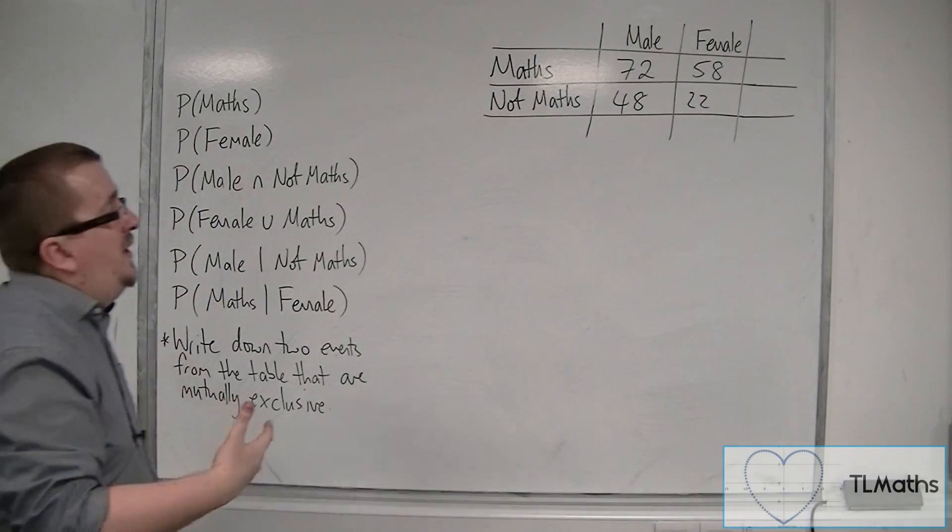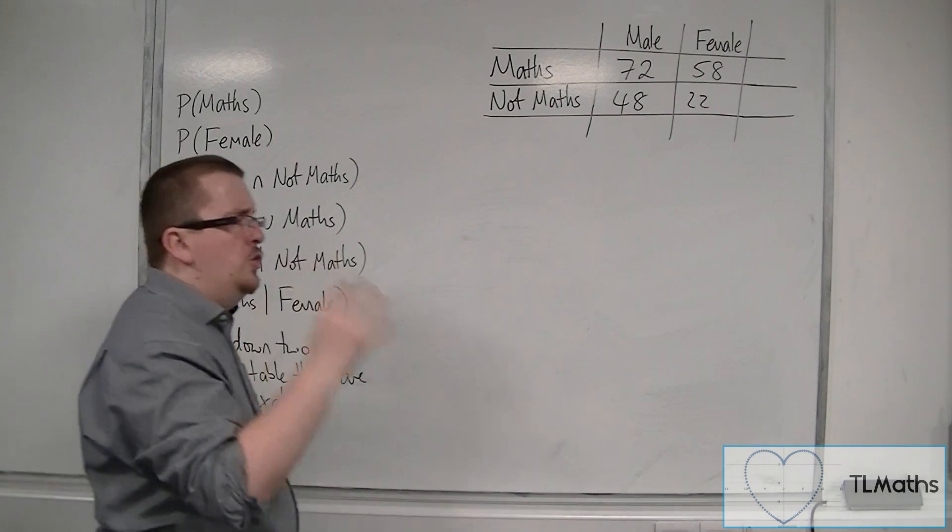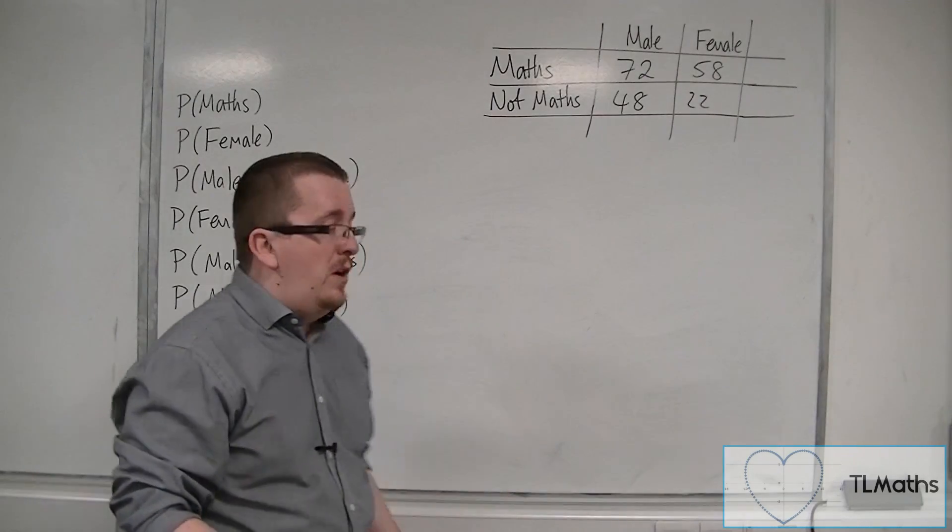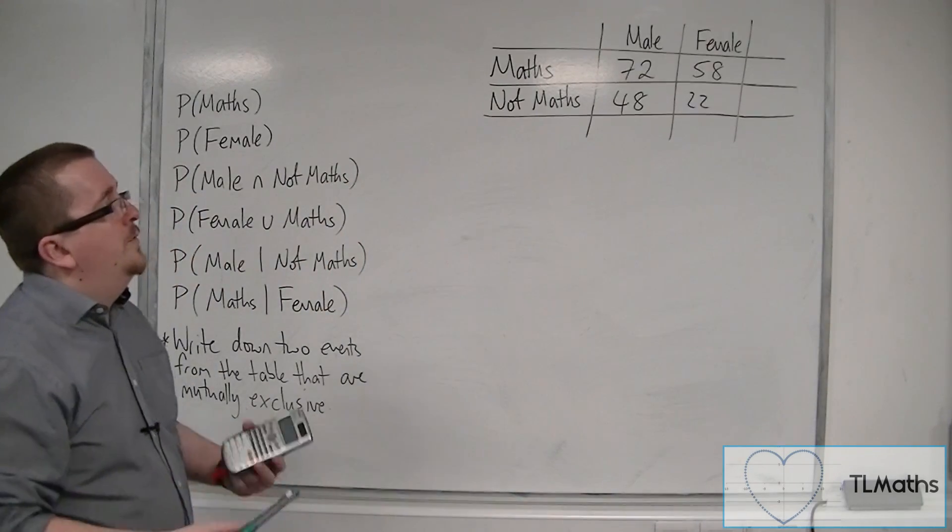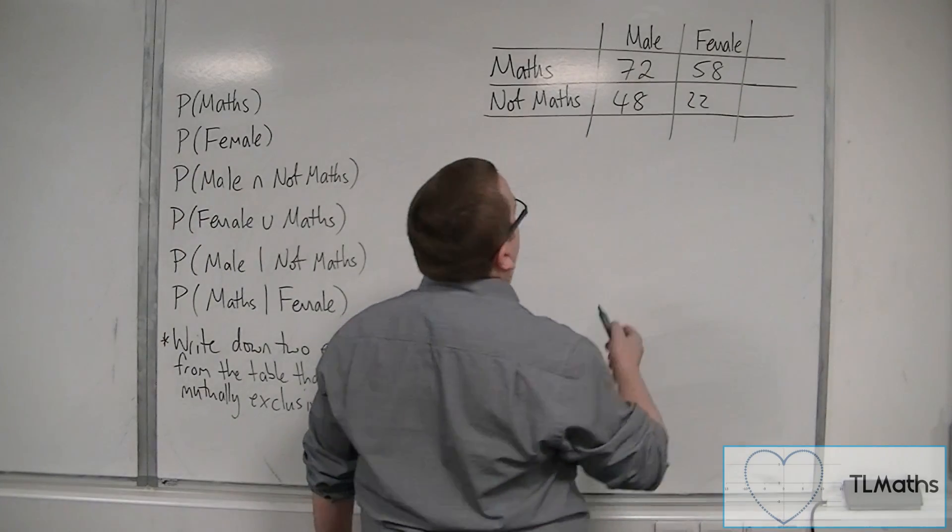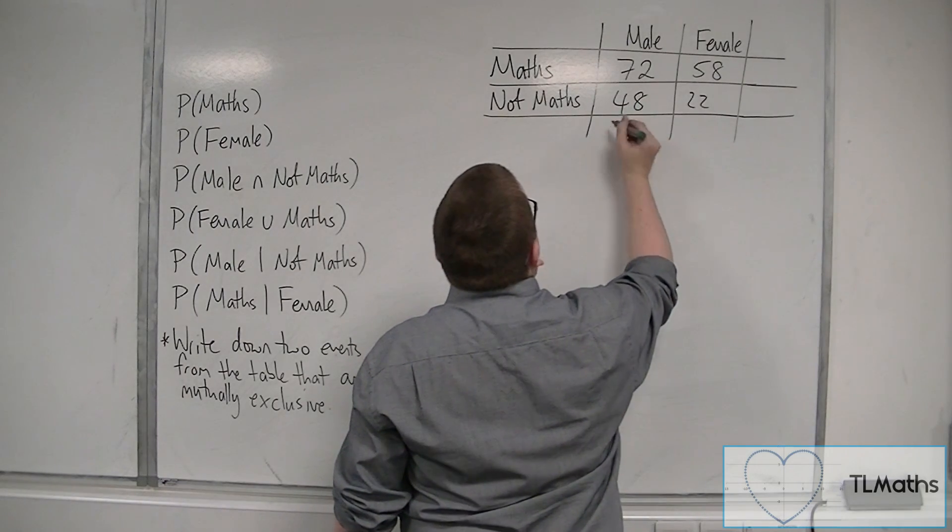And the first thing to do with a two-way table like this is to make sure that you have added up the totals. The totals may well be there if the question is in the exam, but if not then they need to be. So we're going to do 72 plus 48, so that's going to get me 120.